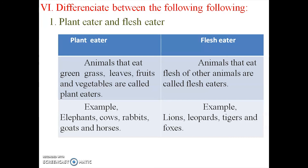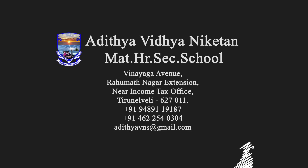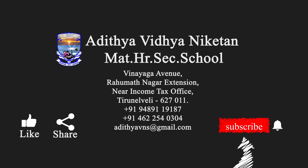Sixth section — differentiate between plant eaters and flesh eaters. Plant eaters: animals that eat green grass, leaves, fruits, and vegetables are called plant eaters. Examples: elephants, cows, rabbits, goats, and horses. Flesh eaters: animals that eat the flesh of other animals are called flesh eaters. Examples: lion, leopard, tigers, and foxes.